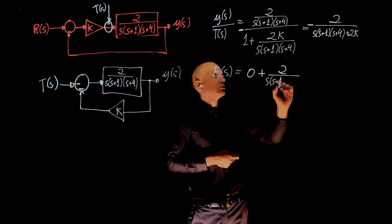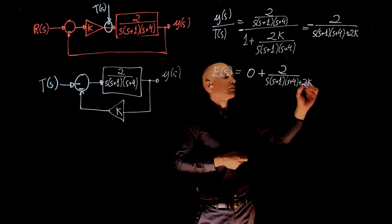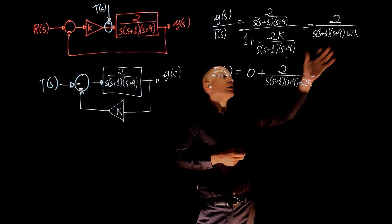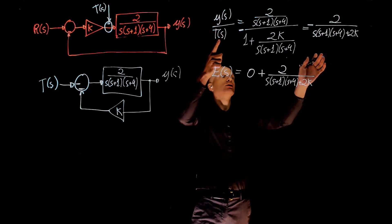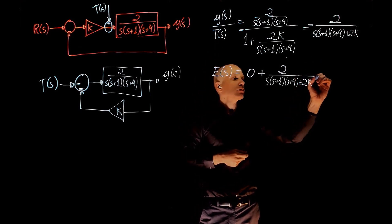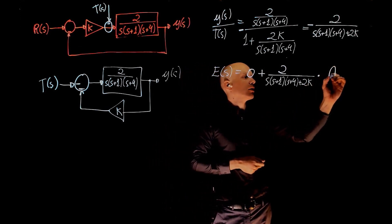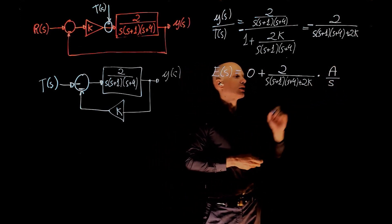2/(S(S+1)(S+4) + 2K). So this is the transfer function Y over T. So if you now multiply this by T, we get Y. So let's give this T a step input of magnitude A. So A over S.